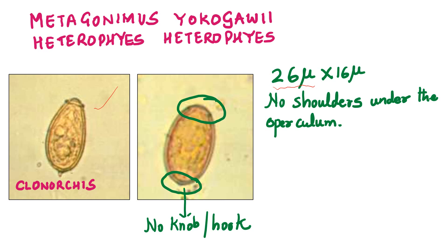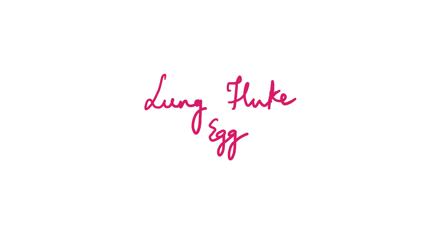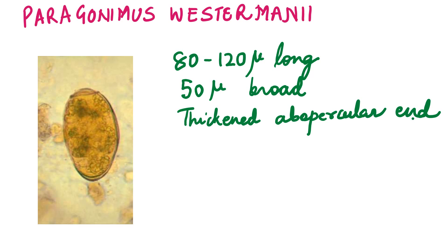Let's move on to the lung fluke — Paragonimus westermani, the Oriental lung fluke. The eggs are passed out in the sputum, and sometimes when the patient swallows the sputum, the eggs are also demonstrable in the stool. The opercular end is slightly flattened, though that is difficult to appreciate. The eggs are 80 to 120 microns — somewhere between small-sized and big-sized eggs — and the ab-opercular end is thickened. This finishes those fluke eggs which are operculated.